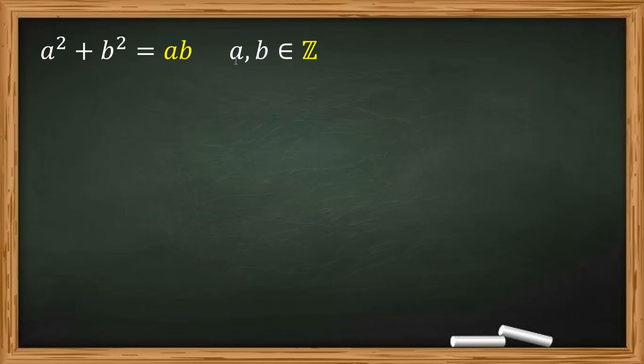a squared plus b squared equals ab, where a and b are integers. We want to find a and b.